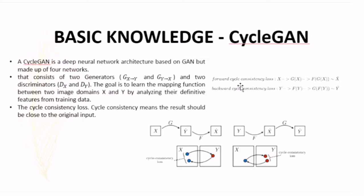Next, we will discuss CycleGAN. CycleGAN is a deep neural network architecture based on GAN, made up of four networks. It consists of two generators and two discriminators. The goal is to learn the mapping function between two image domains, let's say X and Y, by analyzing their definitive features from training data. In this method, they introduce one more loss called the Cycle Consistency Loss. The Cycle Consistency means the result should be close to the original input.